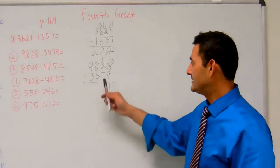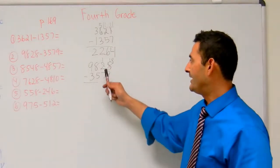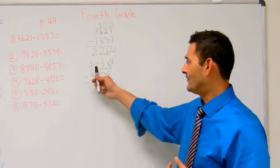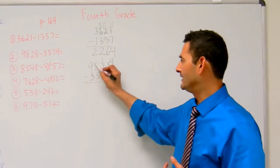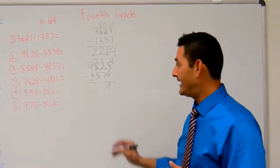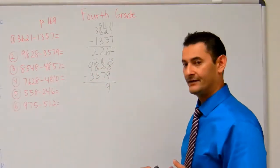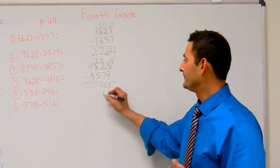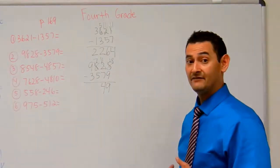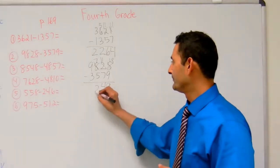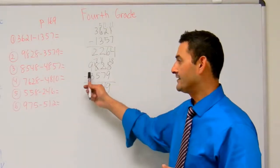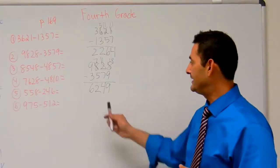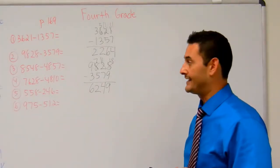Now let's look at the 10's place. 1 minus 7 — I can't do that. Let's borrow from the 100's place. I'm going to borrow 10 10's. That's going to be 11. 11 minus 7 — that's 4. 7 minus 5 — I can do that, that's 2. And finally the 1,000's place: 9 minus 3 is 6. The answer is going to be 6,249.